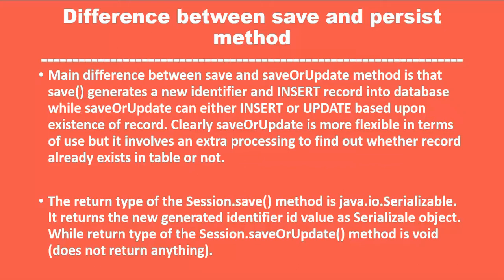The second difference is the return type. The session.save method returns a Serializable object — it generates a new identifier and returns it. The return type of saveOrUpdate is void, so it does not return anything. Let me explain these two differences with an example.